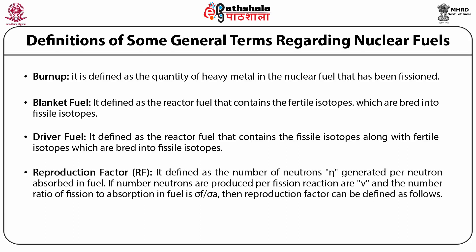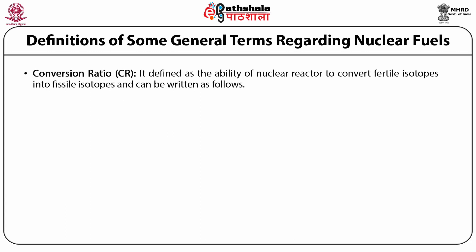Next, we will discuss the reproduction factor or RF. It is defined as the number of neutrons (eta) generated per neutron absorbed in a fuel. If the number of neutrons produced per fission reaction is ν and the ratio of fission to absorption in fuel is σf divided by σa, then the reproduction factor is: eta = (σf / σa) × ν. The value of eta is higher for fast reactors compared to thermal reactors.